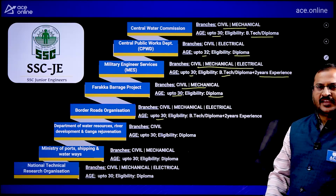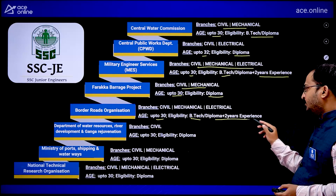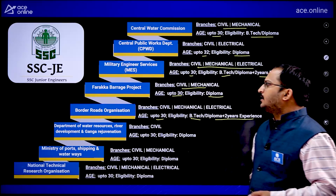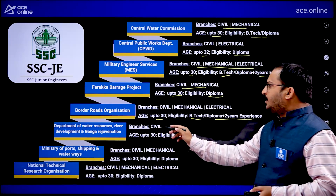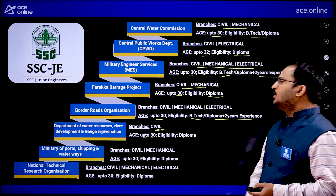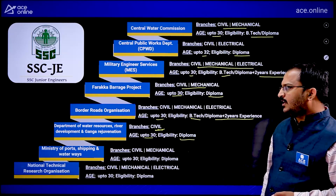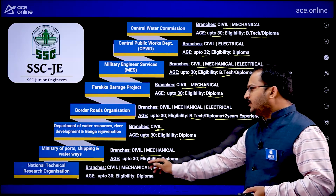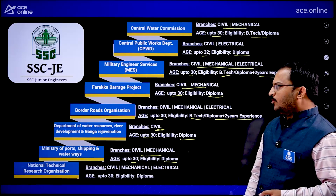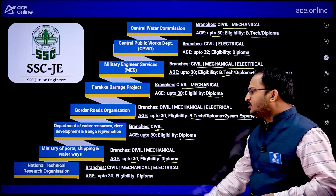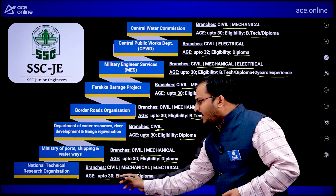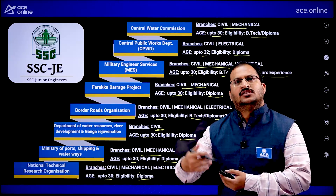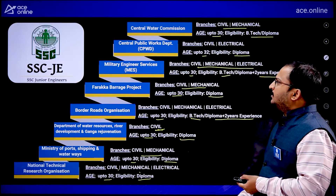Border Roads Organization accepts Civil, Mechanical, and Electrical students up to 30 years of age, eligibility B.Tech or Diploma plus two years of experience. Department of Water Resources, River Development and Ganga Rejuvenation is for Civil students only, age up to 30, eligibility Diploma. Ministry of Ports, Shipping and Waterways accepts Civil and Mechanical students up to 30 years, eligibility Diploma. National Technical Research Organization accepts Civil, Mechanical, and Electrical students up to 30 years, eligibility Diploma. These are the eight departments with available vacancies.